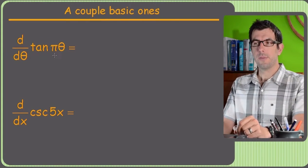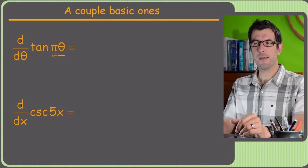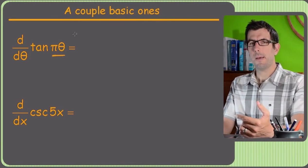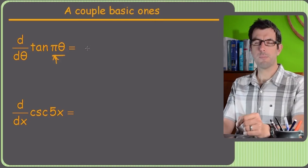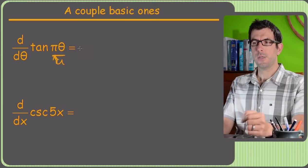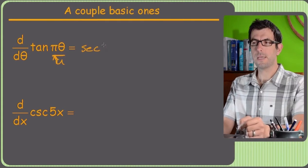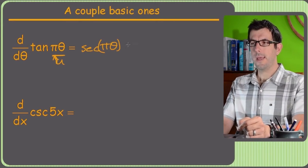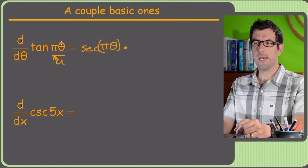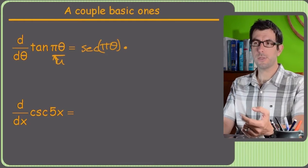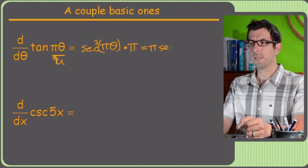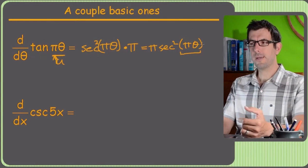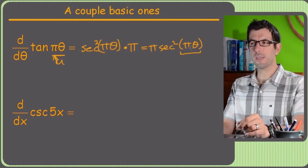Example: derivative of tangent of (pi times theta). That pi in front of theta makes it a chain rule problem. Pi is just a number — not a product rule situation. U is pi times theta. Derivative of tangent of u is secant squared of u, so secant squared of (pi theta), then multiply by u-prime, which is pi. Moving pi out front: pi times secant squared of (pi theta).